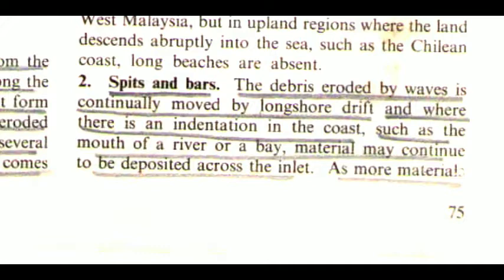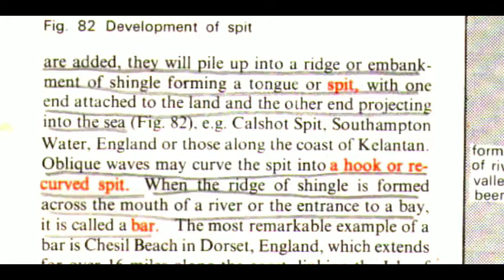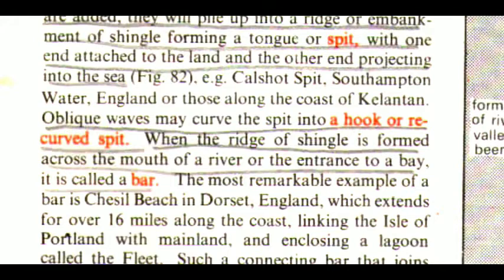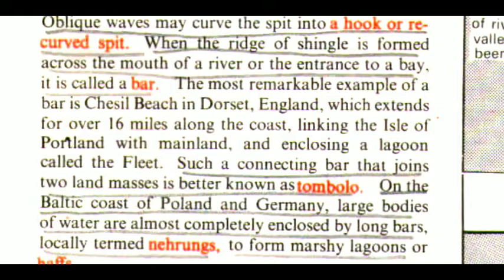The second one is spits and bars. The debris eroded by waves is continually moved by longshore drift, and where there is an indentation in the coast, such as the mouth of a river or a bay, material may continue to be deposited across the inlet. As more materials are added, they will pile up into a ridge or embankment of shingle forming a tongue or spit, with one end attached to the land and the other end projecting into the sea — e.g. Calshot Spit, Southampton Water, and Kuala Besar along the coast of Kelantan. Oblique waves may curve the spit into a hook or recurved spit. When the ridge of shingle is formed across the mouth of a river or the entrance to a bay, it is called a bar. The most remarkable example of a bar is Chesil Beach in Dorset, England, which extends for over 16 miles along the coast, linking the island of Portland with the mainland and enclosing a lagoon called the Fleet. Such a connecting bar that joins two land masses is better known as a tombolo.